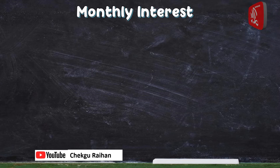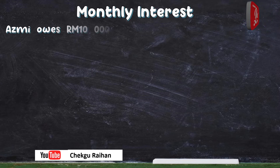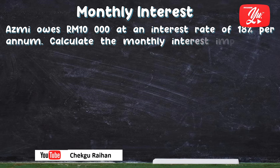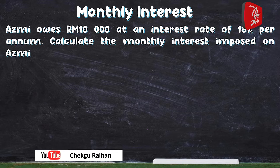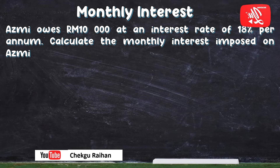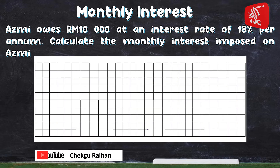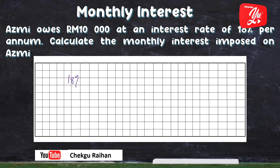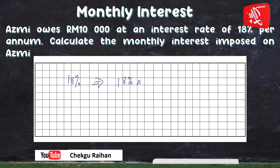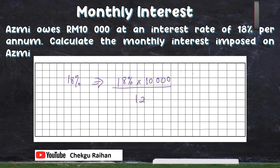Let's see an example for monthly interest. Azmi owes RM10,000 at an interest rate of 18% per annum. Calculate the monthly interest imposed on Azmi. So, 18% times RM10,000 divided by 12 equals RM150.